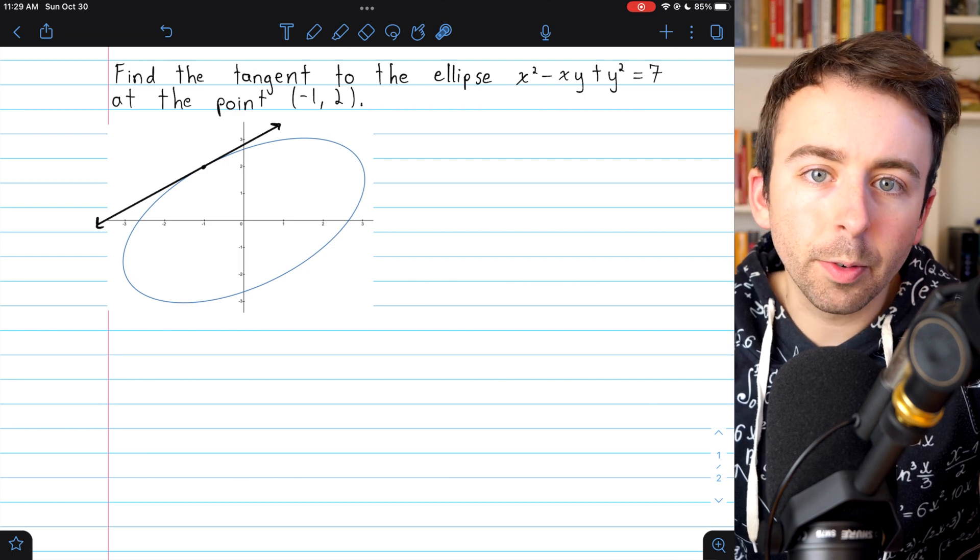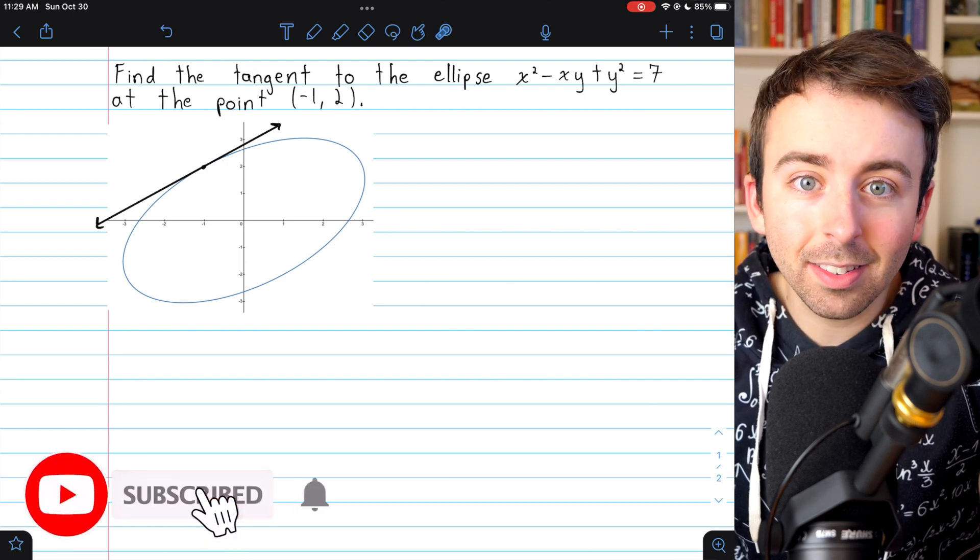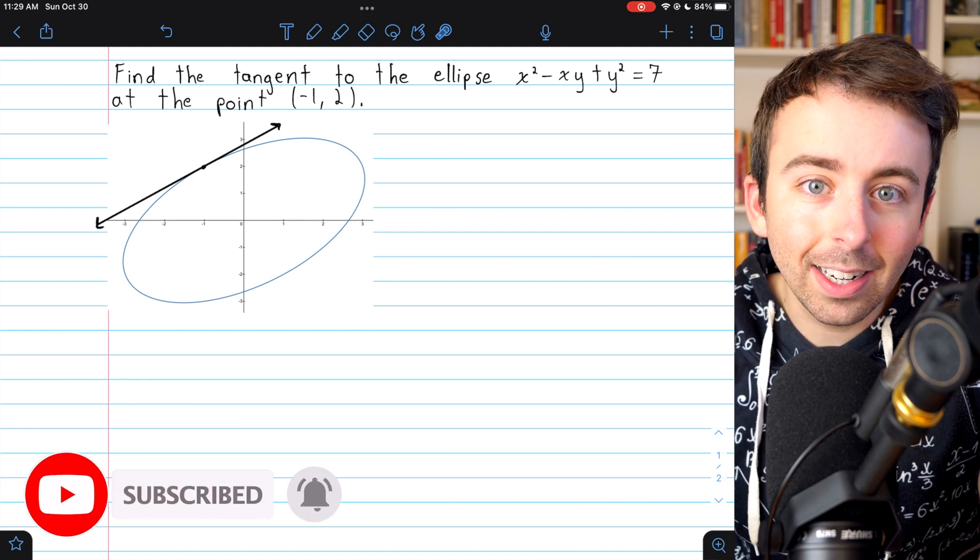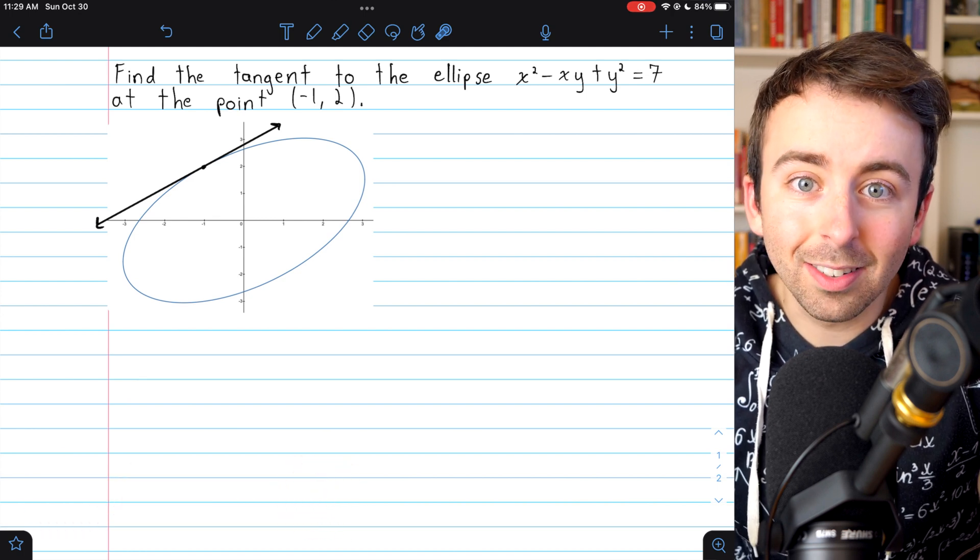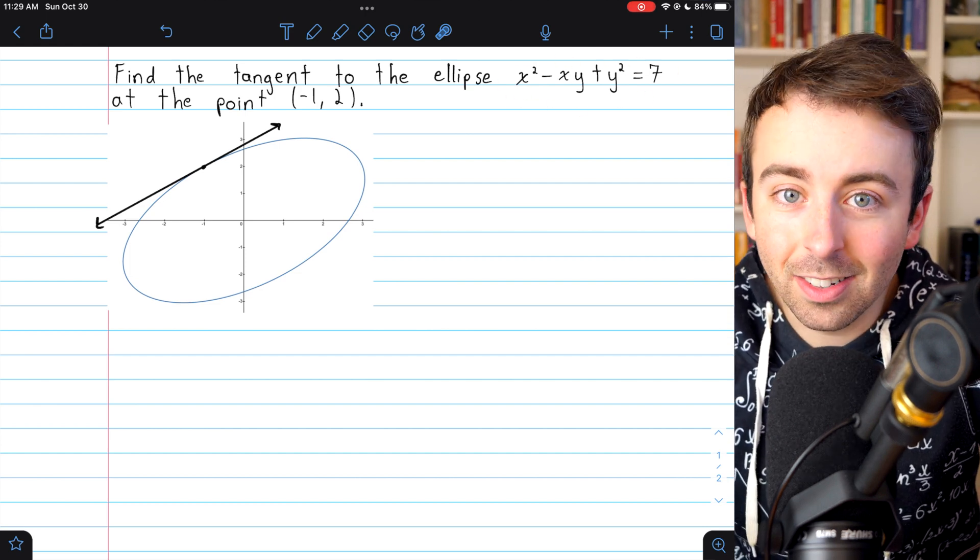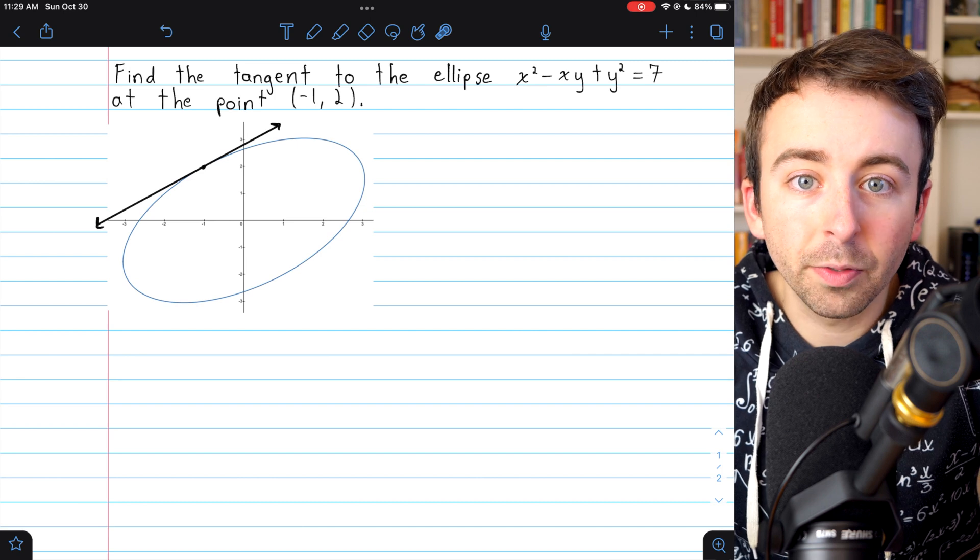After learning how to do implicit differentiation, a natural next step is to try finding the equation of a tangent line to a curve that is described by an equation like this, where y is not explicitly solved for x.